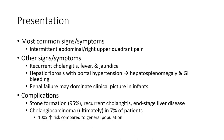Most common signs and symptoms are intermittent right upper quadrant abdominal pain. Other signs and symptoms include recurrent cholangitis, fevers, hepatic fibrosis with portal hypertension leading to hepatosplenomegaly and GI bleeding. Renal failure may dominate the clinical features in infancy.